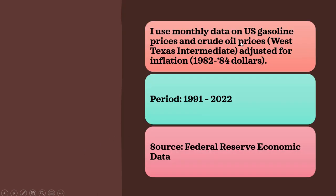I use monthly data on U.S. gasoline prices and crude oil prices adjusted for inflation. The period here is from 1991 through May 2022, and the source is the Federal Reserve economic data.